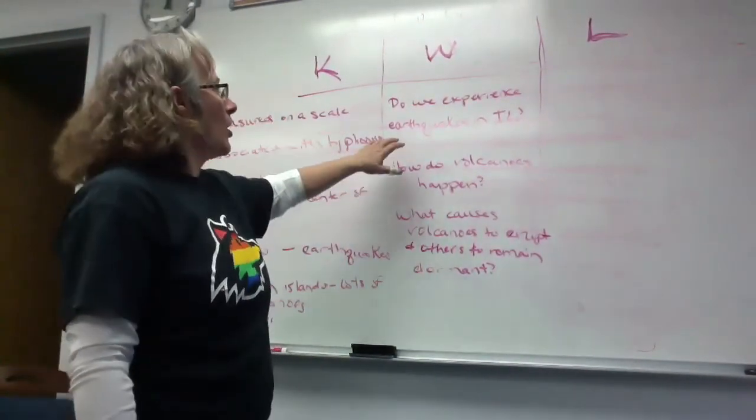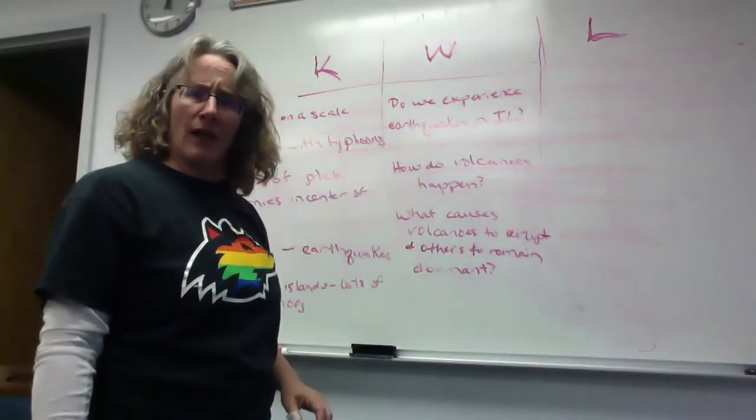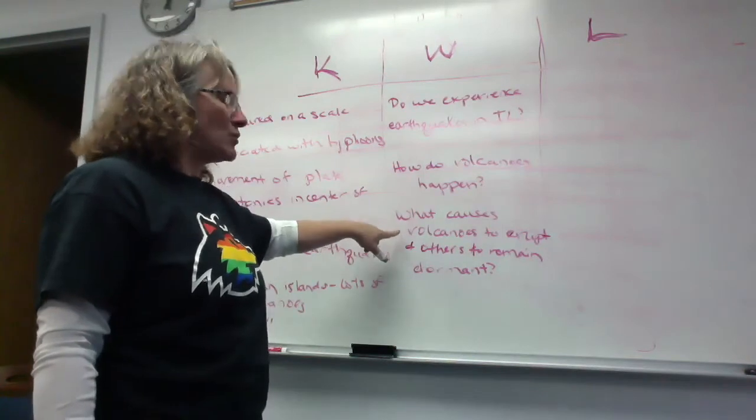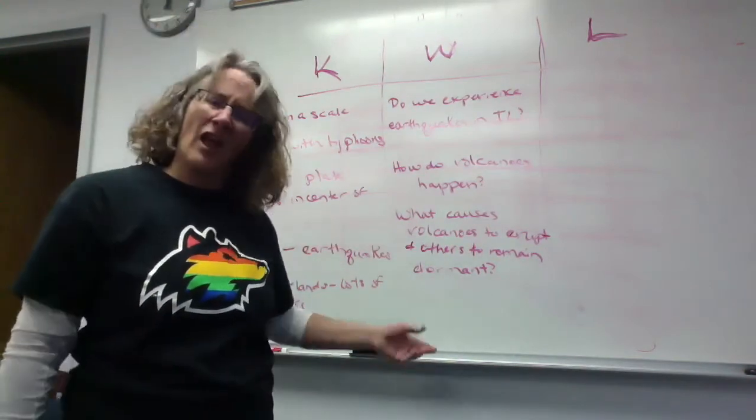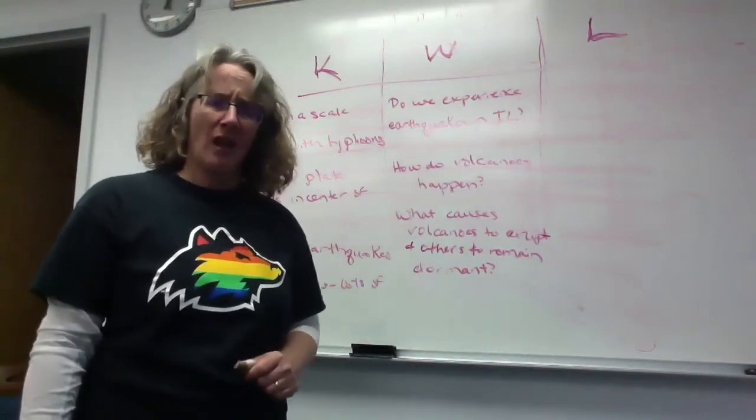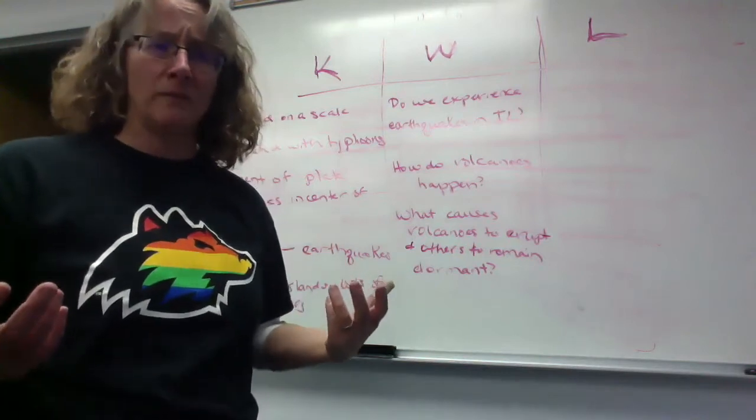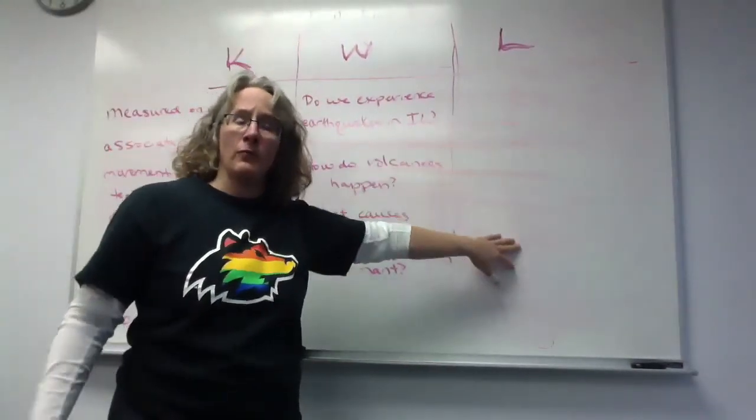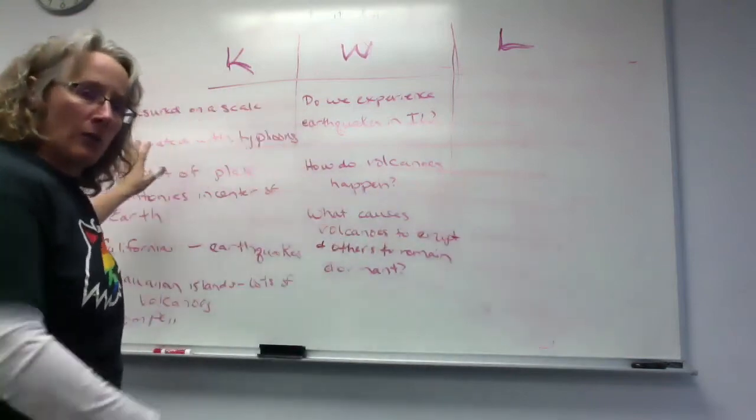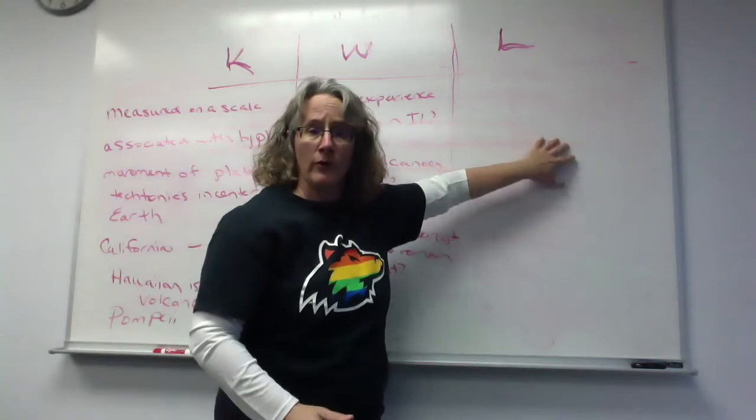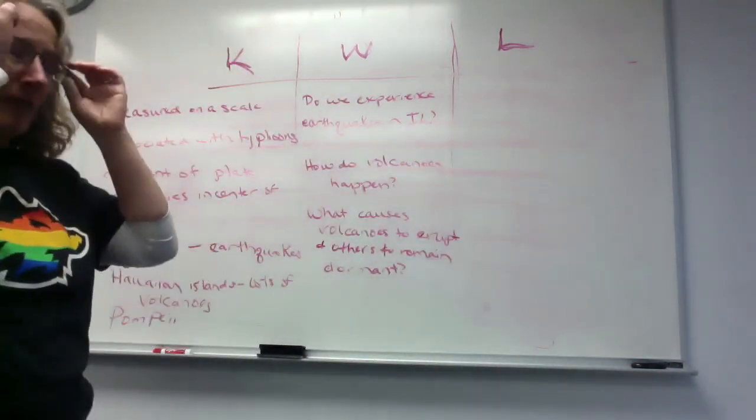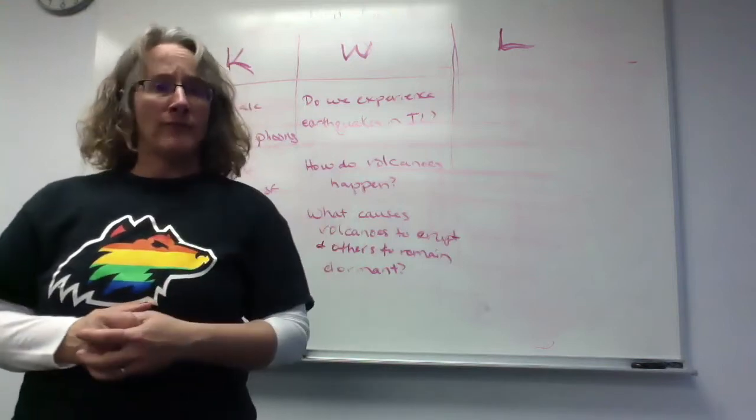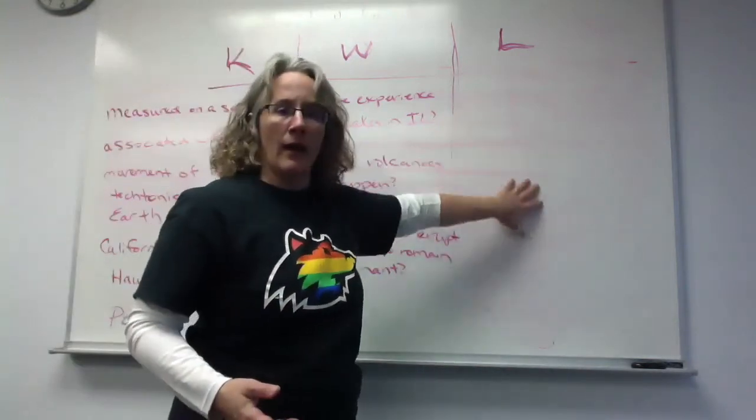Some questions I might have. Do we experience earthquakes in Illinois? I've heard there are, that just seems strange. How do volcanoes happen? What causes volcanoes to erupt and others to remain dormant? And I thought about writing a question about Mount St. Helens in Washington, and is it likely to erupt again soon? So then we would have, then the final column, this is what we call a post reading or review column. So that here is anticipatory, and here is summative and or review. So then students can review what they've learned. And so in this case, we may be from a class discussion. We may highlight what we've learned after a video. Lots of different ways than we highlight what we've learned here.